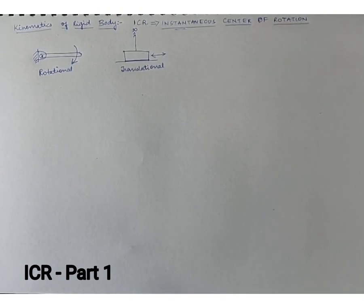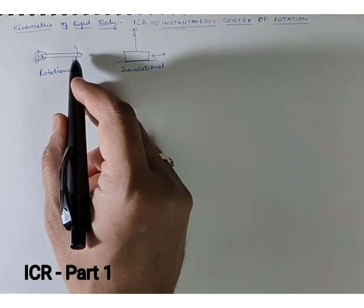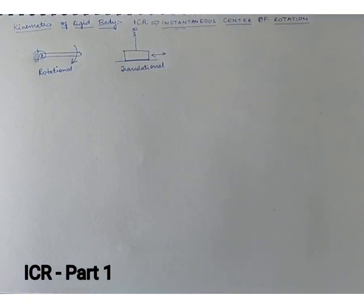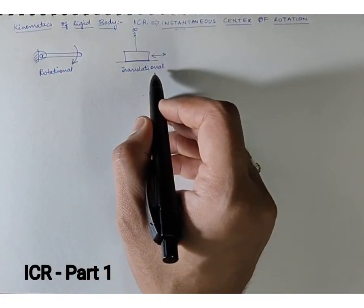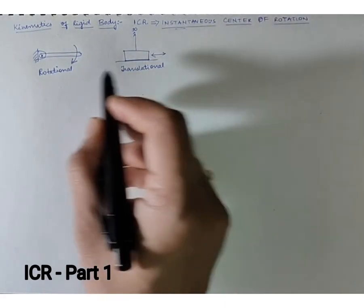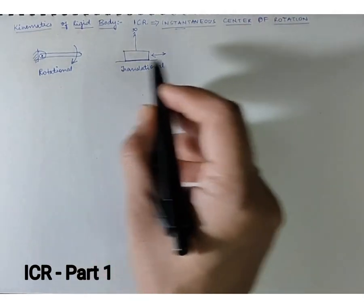In rotational motion, the object will completely rotate about one given point, whereas in translational motion, the motion of the object will be around a particular given plane or a given line.